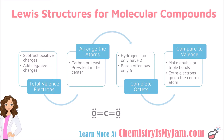Once you have completed the octets, you compare what you have drawn to the number of valence electrons that you calculated at the very beginning. If you have too many electrons drawn, you make double or triple bonds. If you have too few electrons drawn, any extra electrons can go on the central atom.